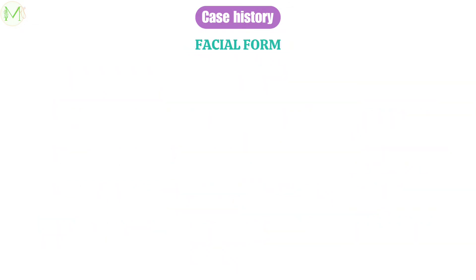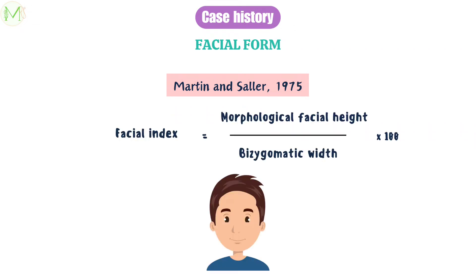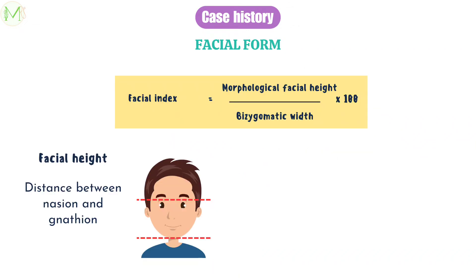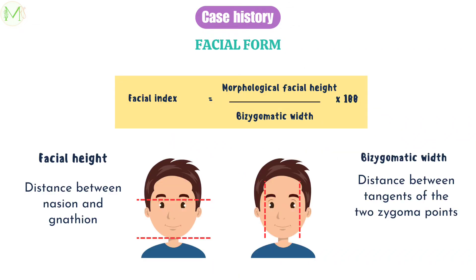Moving on to facial form. It is determined by facial index, also given by Martin and Salyer in 1975. Facial index is the ratio between morphological facial height and bisygomatic width. Facial height is determined by the distance between nasion and gnathion. Bisygomatic width is determined by the distance between tangents to the two zygomatic points.